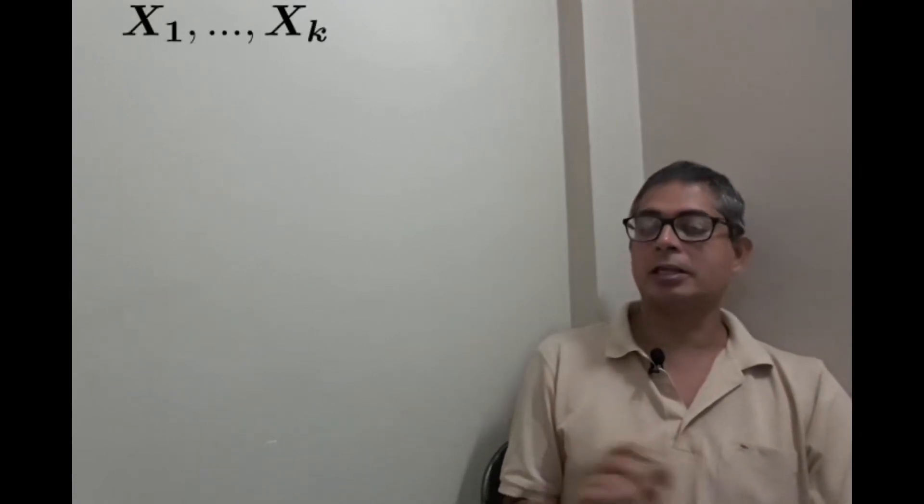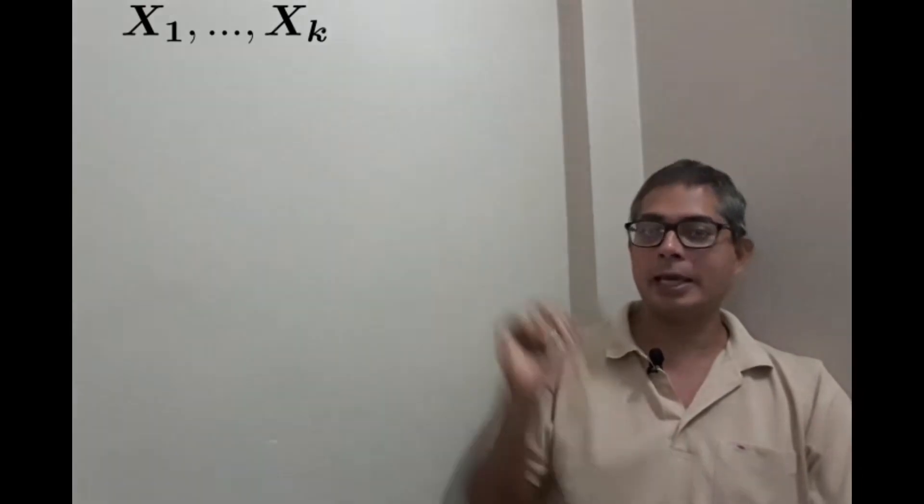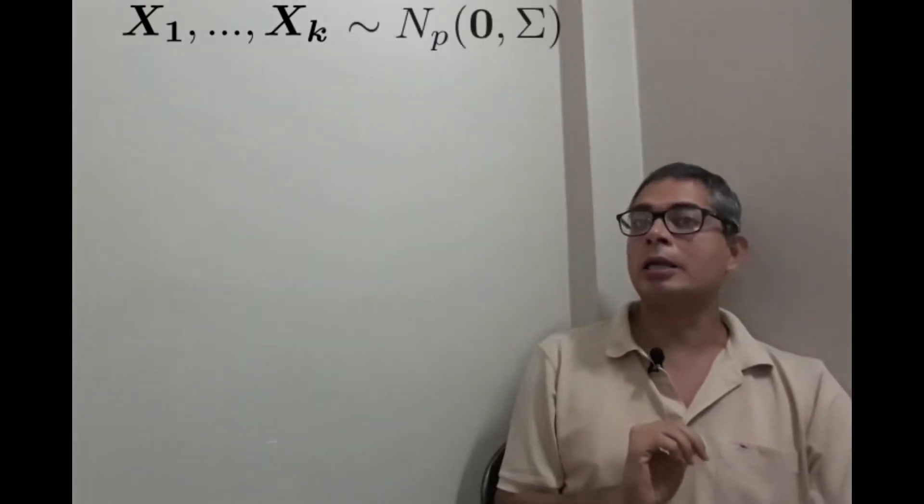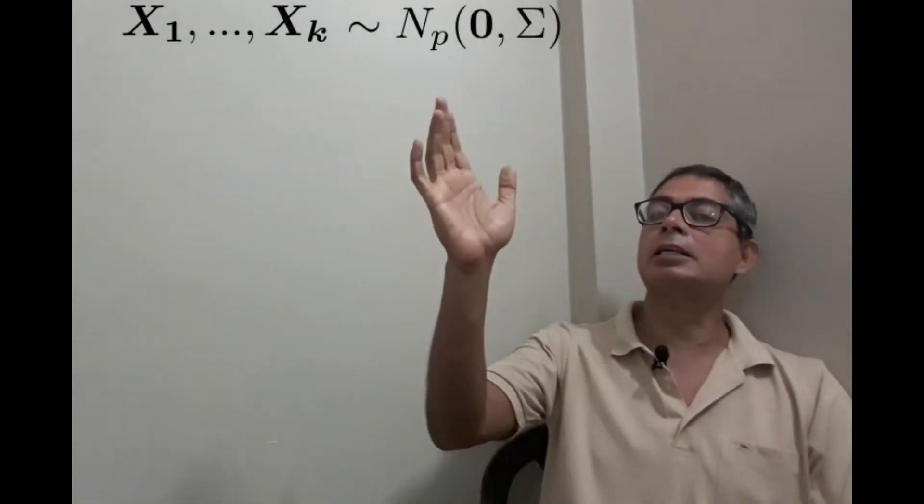Well, we are going to do a similar thing now, but this time with multivariate normal. We start with k p-dimensional random vectors X₁ to Xₖ that are all iid multivariate normal.